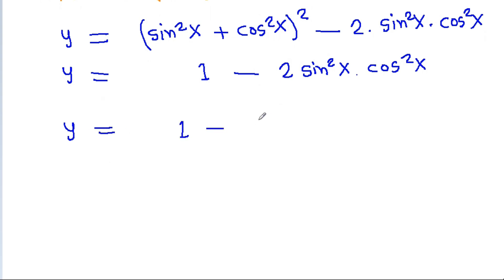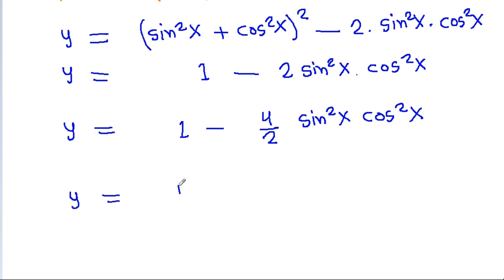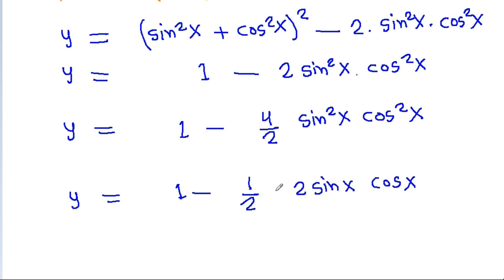So y = 1 - 2·sin²x·cos²x, and the term 2·sin²x·cos²x can be rewritten as (4/2)·sin²x·cos²x, which equals (1/2)·(2sinx·cosx)².